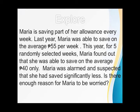Example: Maria is saving part of her allowance every week. Last year, Maria was able to save on the average 55 pesos per week. This year, for five randomly selected weeks, Maria found that she was able to save on average 40 pesos only. Maria was alarmed and suspected that she had saved significantly less. Is there enough reason for Maria to be worried? So the research objective for this problem is to determine if the average weekly savings of Maria for this year is less than last year's average weekly savings. To state this as a statistical objective: to determine if there is a significant difference on the average weekly savings of Maria for this year compared to last year's average weekly savings.